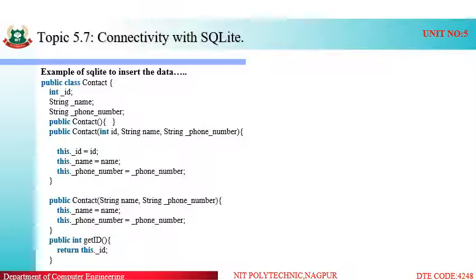We have also created another parameterized constructor — we are overloading the constructor. The first constructor is the default constructor, the second is a parameterized constructor with id, name, and phone number, and the third is also a parameterized constructor but provides only name and phone number. So we have three constructors: the first with default values, the second with id, phone number, and name, and the third with only name and phone number.